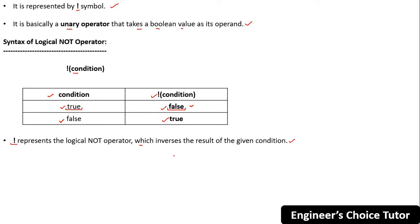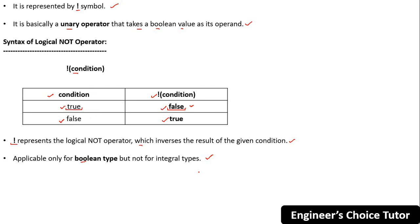The main point is it is applicable only for boolean type, not for integral types — remember this. For example, System.out.println with NOT of true: the inverse of true is false, so you will get false on the output console.